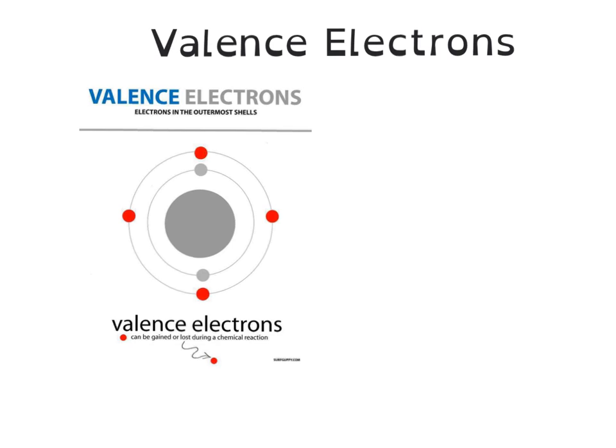Hello, this screencast is about valence electrons. Valence electrons are the electrons in the outermost shell, and these are the ones that can be gained or lost during a bond and can be shared during a bond.